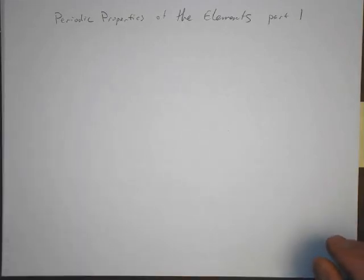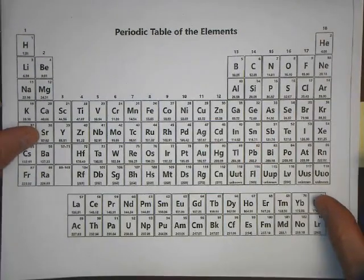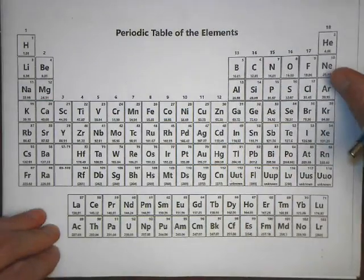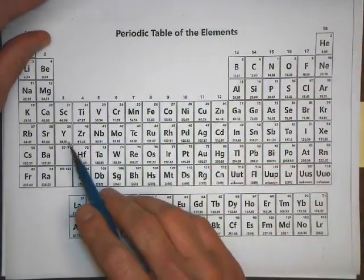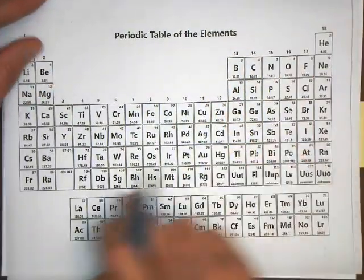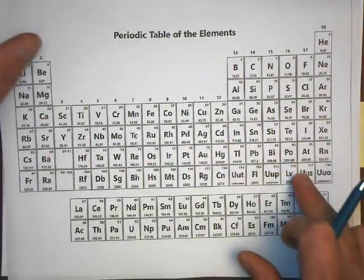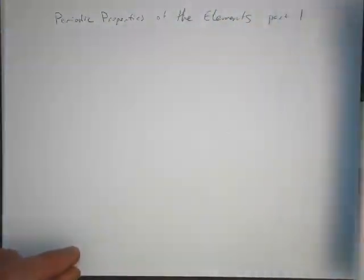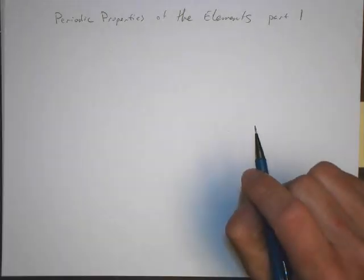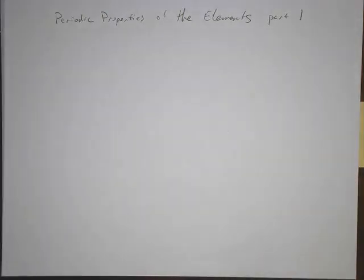Periodic properties of the elements. When Mendeleev put together the periodic table, or the initial versions of the periodic table, it was mainly based on atomic weights and chemical properties. Things that had similar chemical properties were placed in these columns, and they were arranged by increasing weight. That's essentially what we have today. But there are properties of the elements that vary periodically, and that's why they are arranged like they are. We're going to look at about four or five of them.